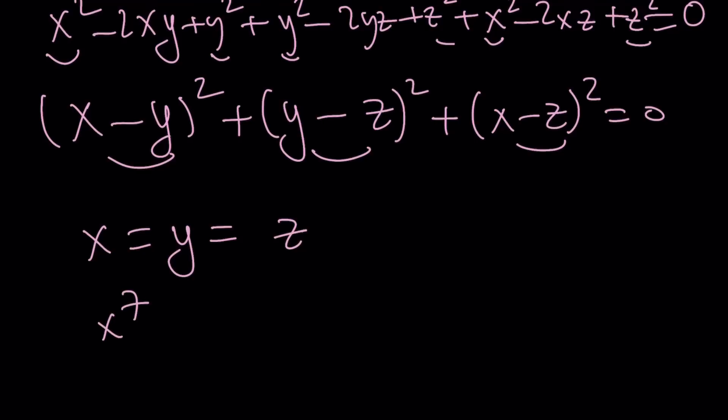That means x to the 7th, and of course, they're all or they're each equal to 1. So each of these is equal to 1, and their sum is equal to 3.